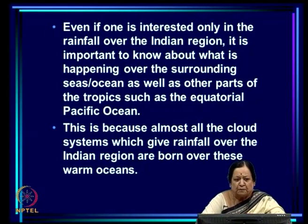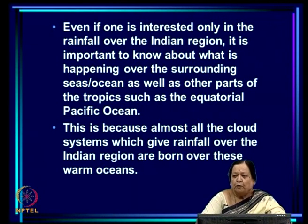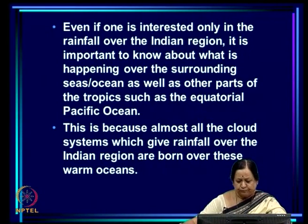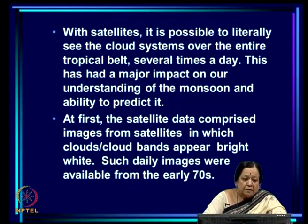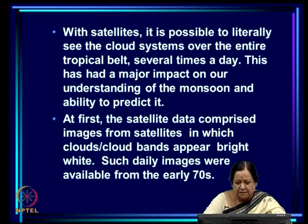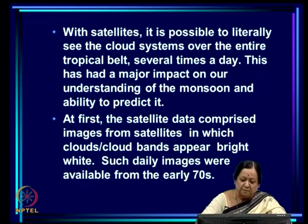The Arabian Sea, Bay of Bengal, Equatorial Indian Ocean, Equatorial Pacific Ocean, and warm parts of the West Pacific are the breeding regions for the cloud systems which actually give rainfall. Earlier, without satellites, we did not really have good data on what was happening over the oceans. With satellites, it is possible to literally see cloud systems over the entire tropical belt several times a day.